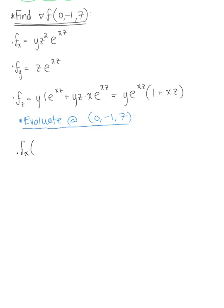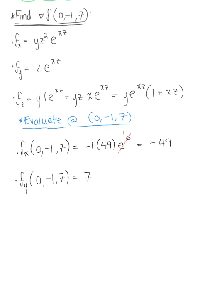The partial derivative with respect to x at (0, minus 1, 7) gives us minus 1 multiplied by 49 times the natural exponential raised to 0. Since anything raised to 0 equals 1, this leaves us with minus 49. Next, the partial derivative with respect to y at (0, minus 1, 7) gives us 7 times the natural exponential raised to 0, leaving us with just 7.